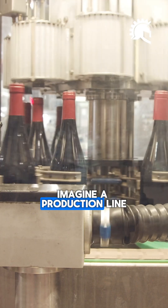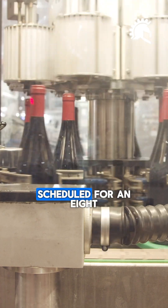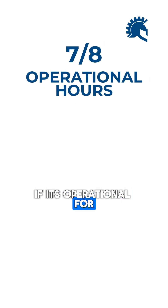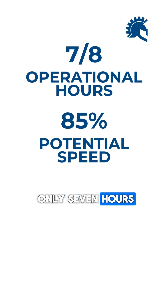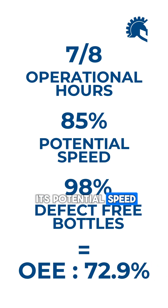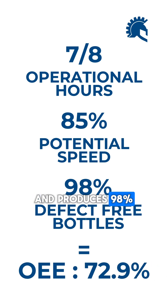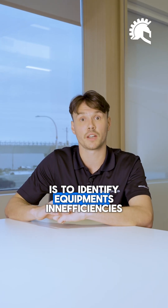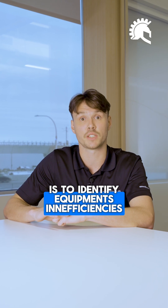For example, imagine a production line scheduled for an eight-hour shift. If it's operational for only seven hours, runs at 85% of its potential speed, and produces 98% defect-free bottles, the OEE score would be 72.9%.